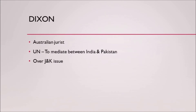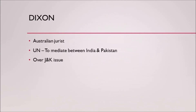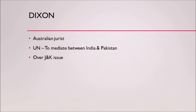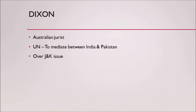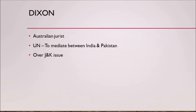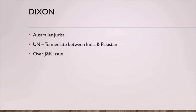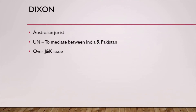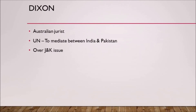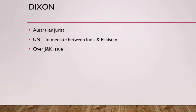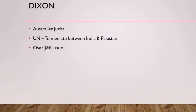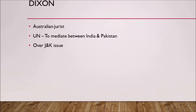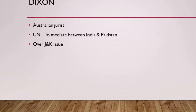Now, coming to the main topic of interest — the Dixon Plan. After the partition of India and Pakistan, the question arose as to who gets Jammu and Kashmir. To decide on this issue, Owen Dixon, an Australian jurist, was chosen by the United Nations to mediate between India and Pakistan. In his report of September 1950, he suggested a package which did not find acceptance from India.